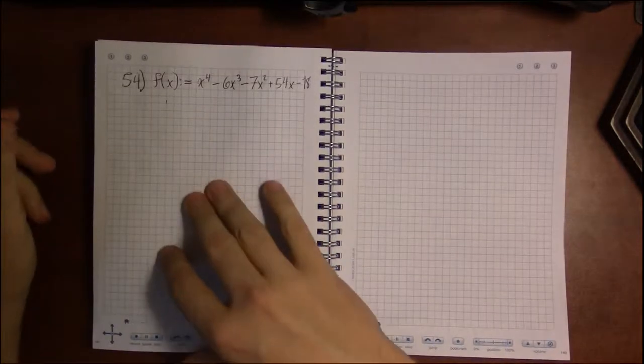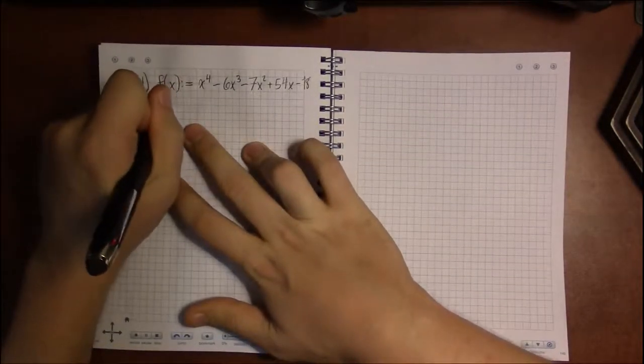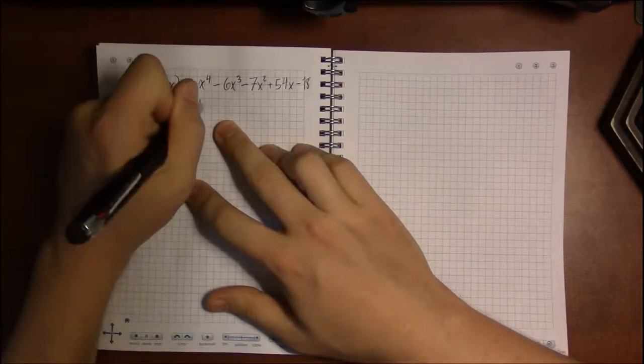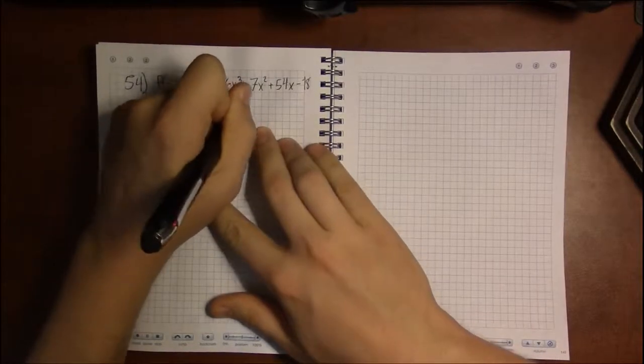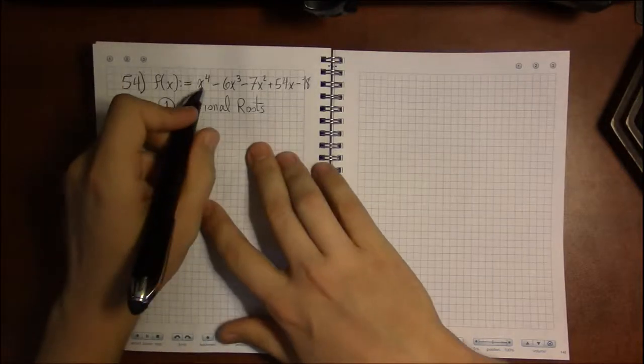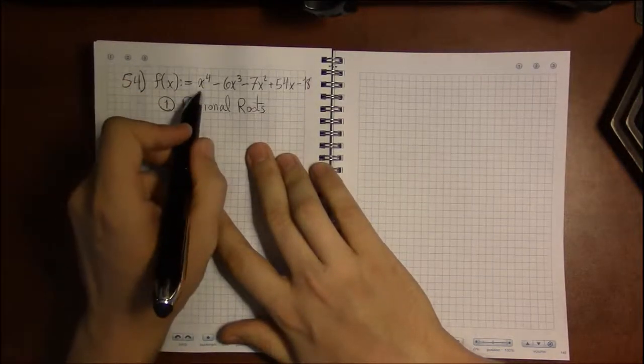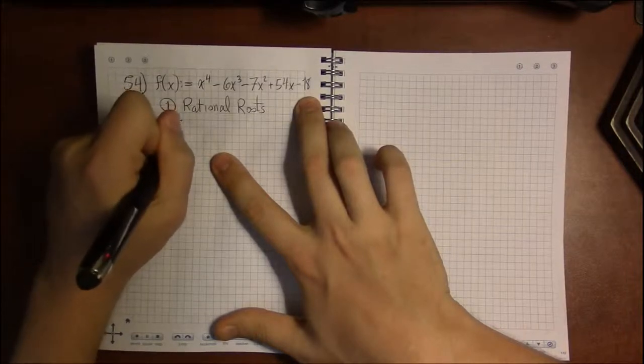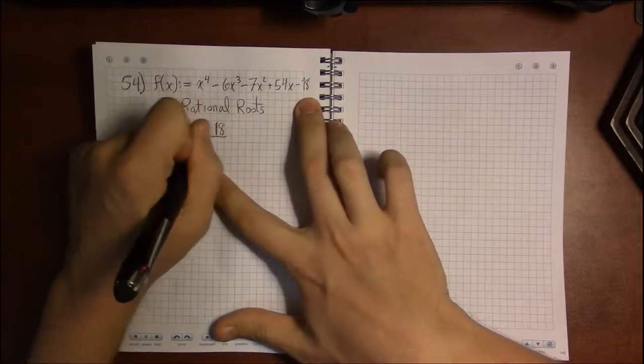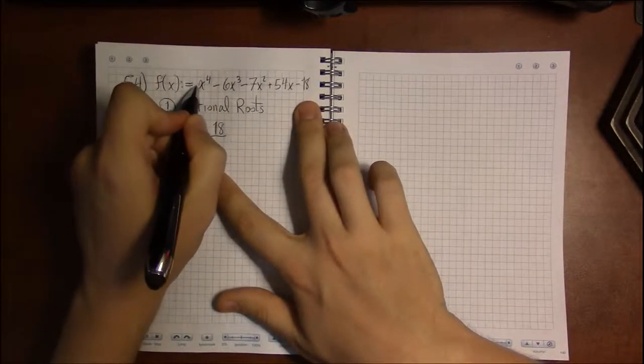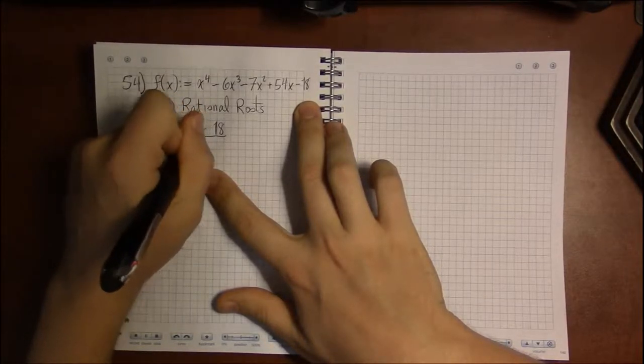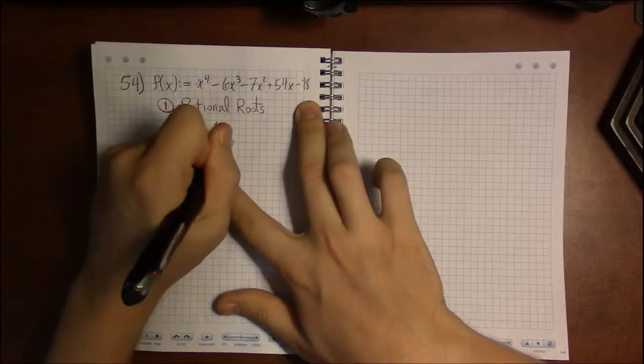In this case, we're dealing with a fourth order or a quartic polynomial. x to the fourth minus 6x cubed minus 7x squared plus 54x minus 18. We start off with, oh I'm sorry, I didn't even do the steps like I normally do. Step one is to do the rational roots theorem. Our constant term is 18.